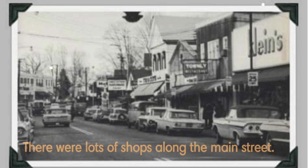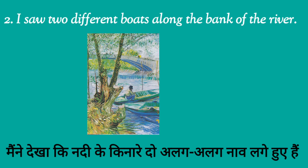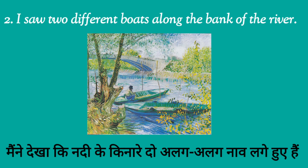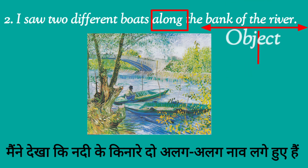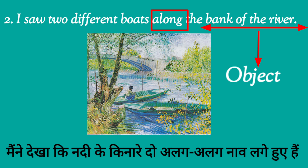Now let's see the second example: 'I saw two different boats along the bank of the river.' मैंने देखा कि नदी के किनारे दो अलग-अलग बोट लगे हुए हैं। Now see in this picture — दो बोट जो कि नदी के किनारे हैं। Along क्या है? Preposition। किस से follow हो रहा है? The bank of the river से — जो कि noun है, and it acts as the object of the preposition Along.